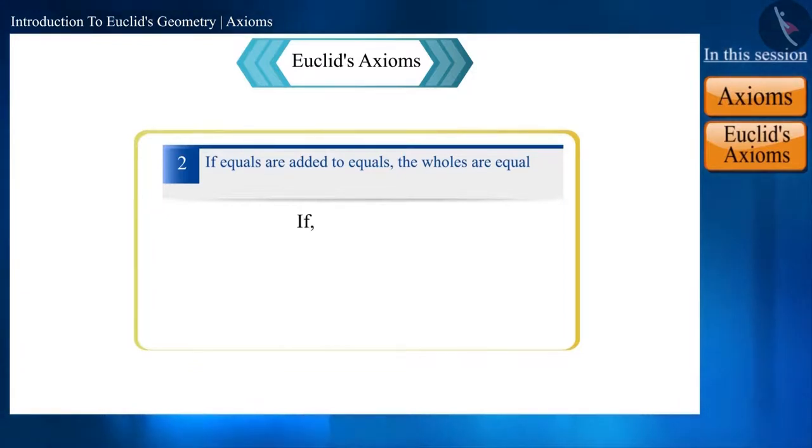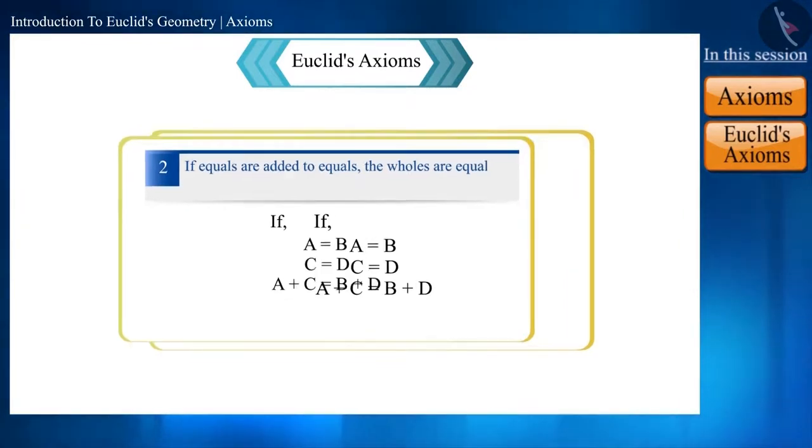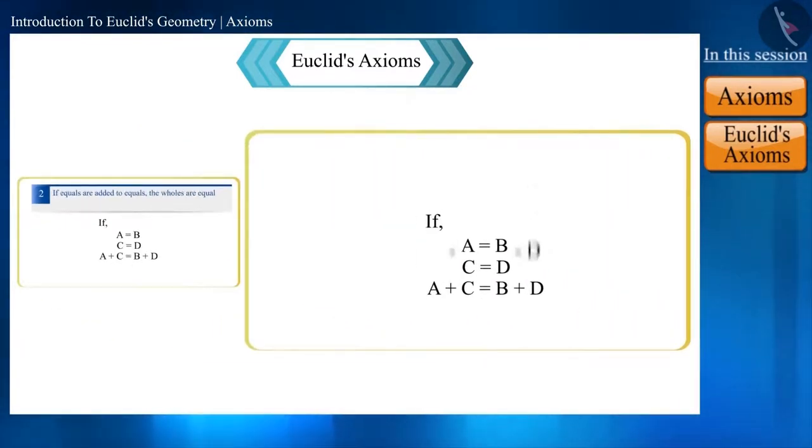According to Euclid's second axiom, if equals are added to equals, the wholes are equal. That is, if a equals b and c equals d, then if we add c to a and d to b, then a plus c will equal b plus d. If instead of adding, what will happen if we subtract? Friends, think a little.